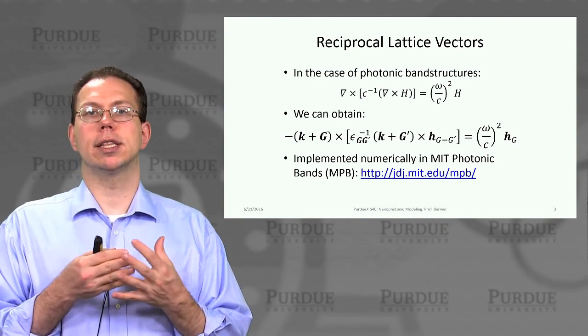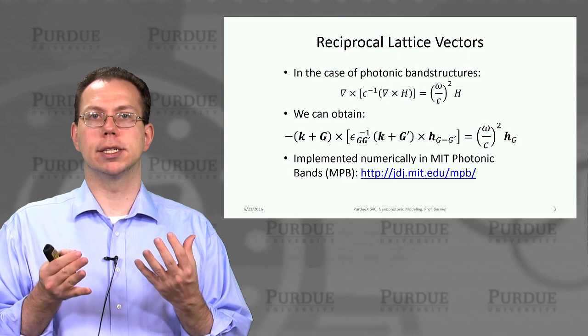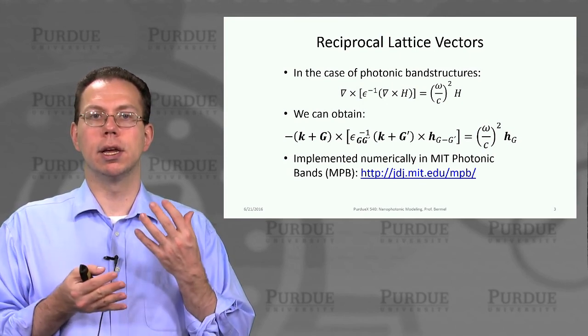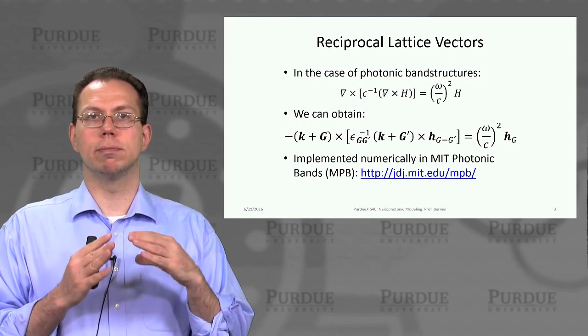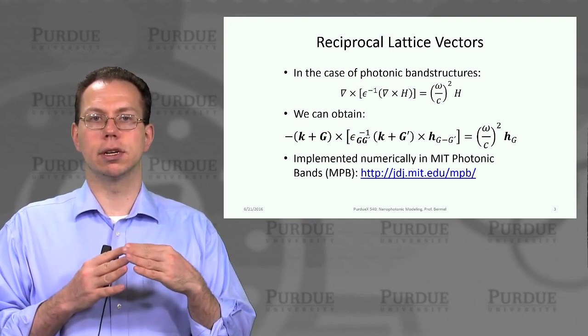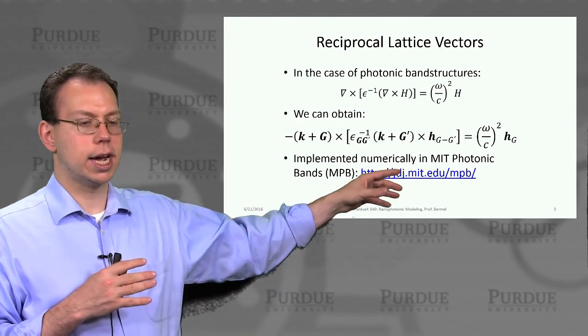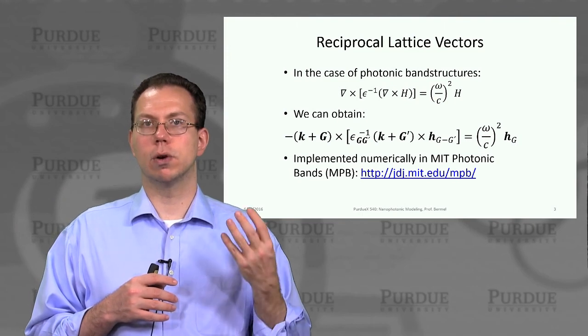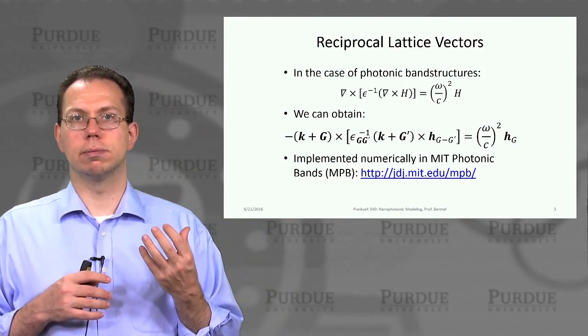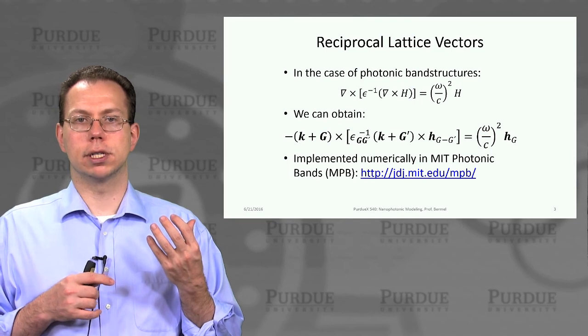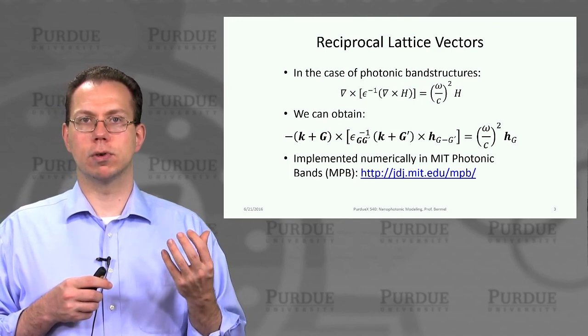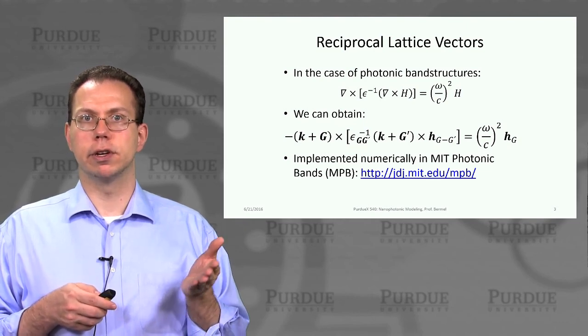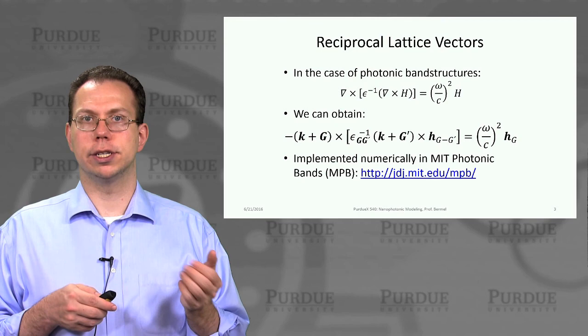We've taken something that could initially be very scary looking because it has a bunch of operators and we don't know how to solve it except in really simple cases. But now we have it written in a form that's general enough so we can solve it using a numerical approach. You can download the software MIT Photonic Bands at this website or use the nanohub.org tool which implements MPB at nanohub.org/tool/MPB. You can use it yourself without any installation, just need a free account.